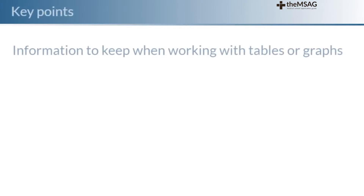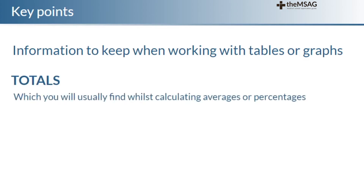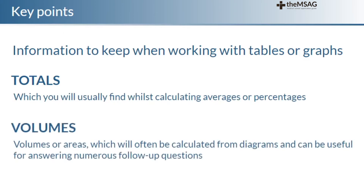So what information should we look to keep when working with tables or graphs? Firstly, totals, which you will usually find whilst calculating averages or percentages. As well as this, volumes or areas — which can often be calculated from diagrams and tables — can be useful for answering numerous follow-up questions. That's not much, because you rarely have enough time to write much down during the UKCAT. Writing too much down costs precious time and is a bad habit for far too many students. But totals and volumes are the exception — they often take 30 seconds to calculate and you do not want to spend another 30 seconds calculating them again.